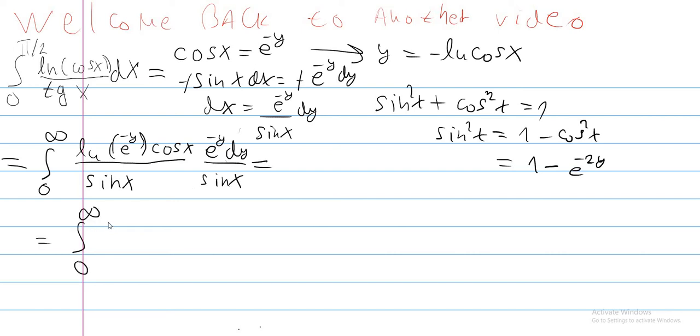Cosine of x is just e to the minus y, so let's plug it all in. This equals an integral from 0 to infinity. We don't need ln anymore. We get minus y, e to the minus y times e to the minus y dy, and here we have 1 minus e to the minus 2y.